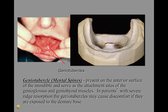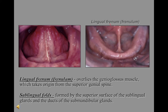Genial tubercles, or mental spines, are present on the anterior lingual surface of the mandible and serve as an attachment site for the genioglossus and geniohyoid muscles. In patients with severe ridge resorption, the genial tubercles may cause discomfort if pinched upon by the denture flange. The lingual frenum overlies the genioglossus muscle, which takes its origin from the superior genial spines. Sublingual folds are formed by the superior surface of the sublingual glands and the ducts of the submandibular glands.